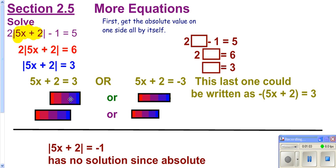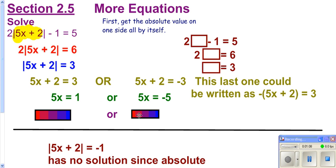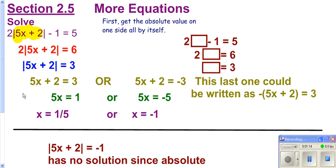Solve each one of these. Subtract your 2, divide by your 5. And so we get our two answers of negative 1 and 1 fifth.